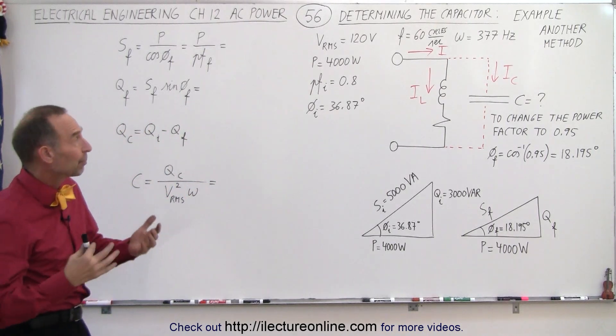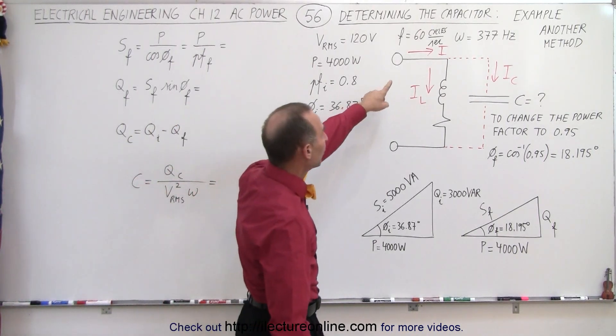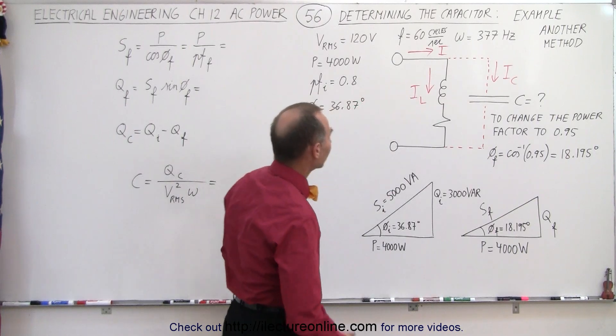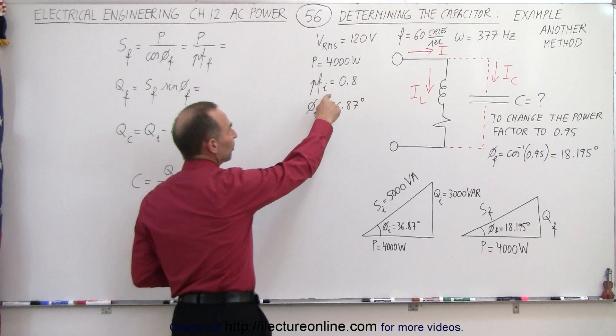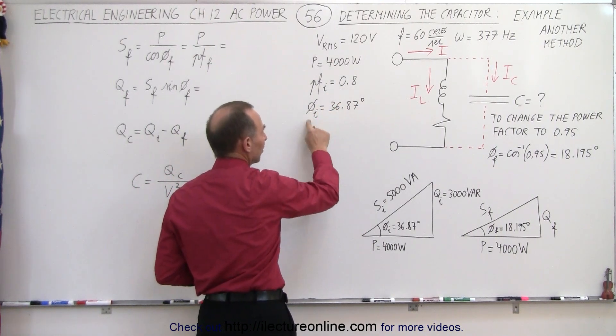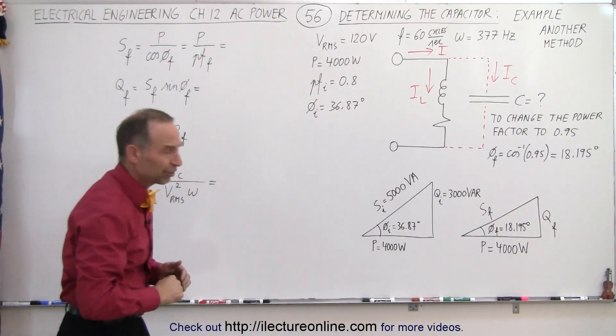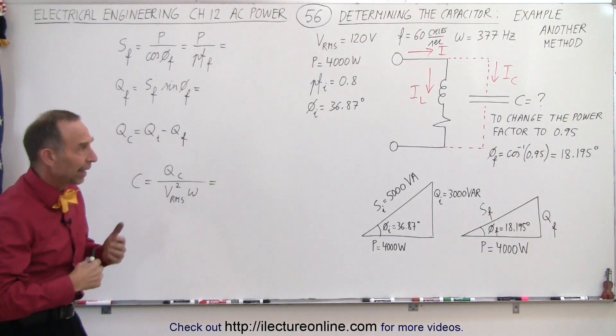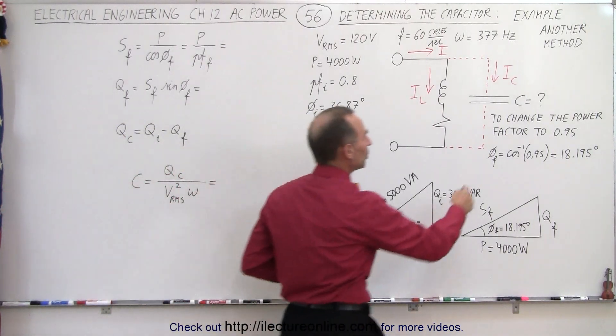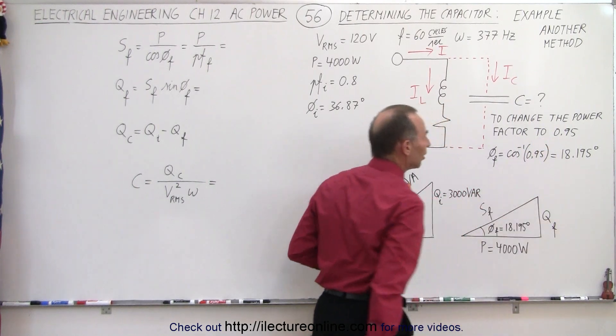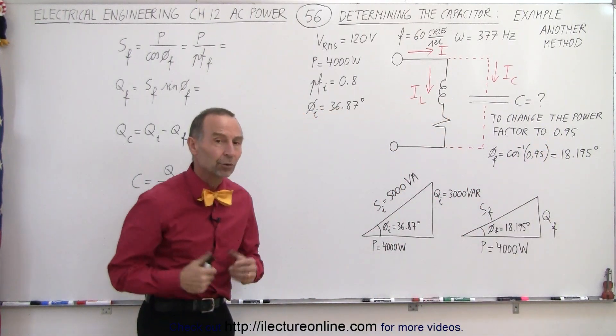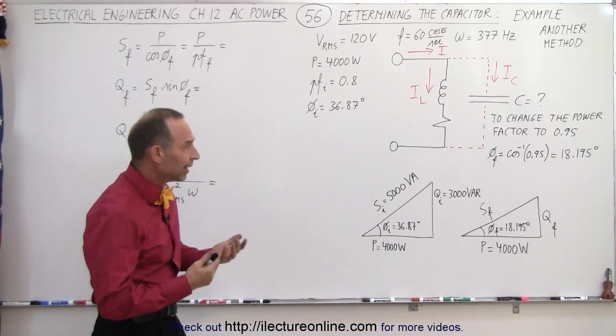Again, we have the same parameters. We have a VRMS of 120 volts, 60 cycles per second on the frequency, the power requirement is 4000 watts, the initial power factor was 0.8, which gives us initial phase angle of 36.87 degrees. And the question is, what capacitor do we need to change the power factor to 0.95, which gives us a new phase angle of 18.195 degrees.